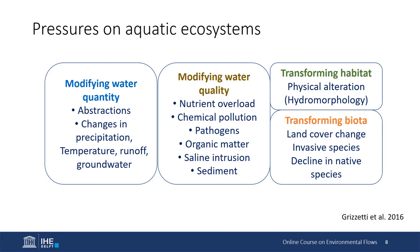There are different pressures that we can classify as those modifying water quantities — such as abstraction of water, but also changes in precipitation because of climate change, and changes in temperature and runoff. There are others that are modifying water quality, such as the overload of nutrients caused by pollution, chemical pollution, pathogens, organic matter, or saline intrusion. Other pressures contribute to transform the habitat — those related to physical alteration both in the river systems and in the catchments. There are others that refer directly to the transformation of biotic communities, such as changes in land cover, invasive species, and the decline in native species.